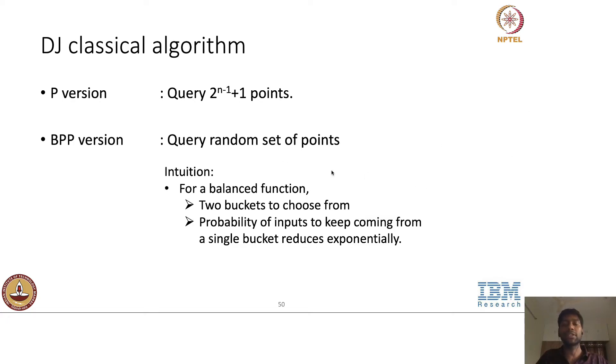So it's like two buckets, bucket of inputs which output zero and bucket of inputs that output one. So the intuitive argument here is that if we choose inputs randomly, if we query the oracle on random set of points, the probability of inputs coming from the same bucket, like let's say bucket zero or bucket one, it reduces exponentially as we keep querying.